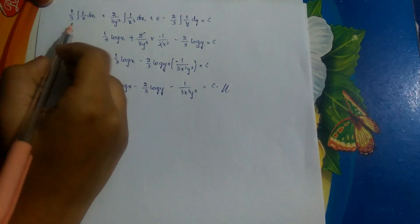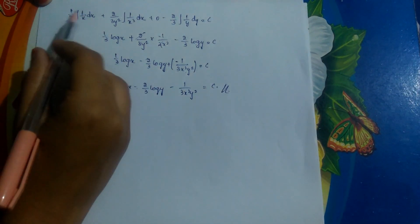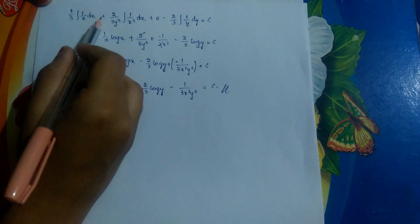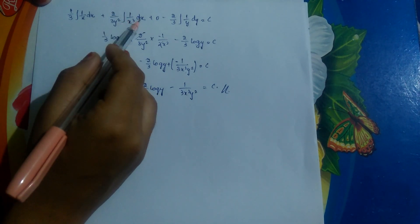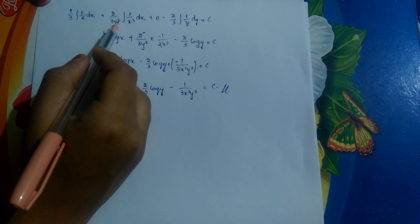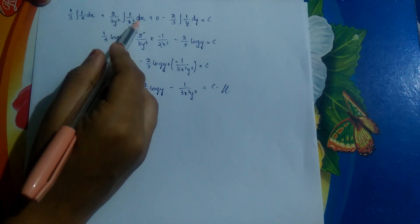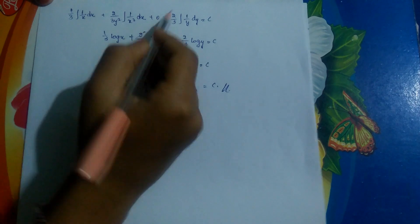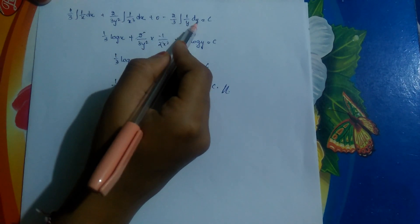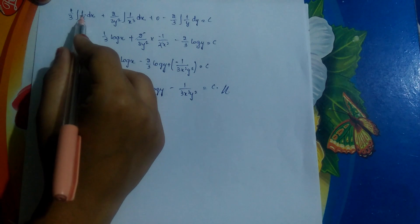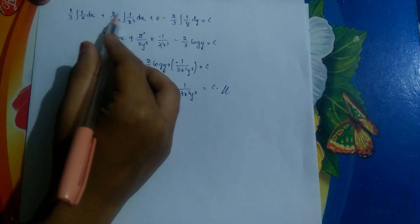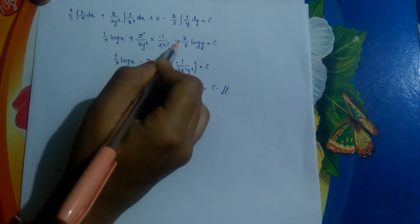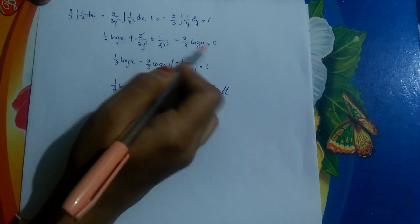Simplifying further: (1/3)∫(1/x) dx + (2/(3y²))∫(1/x³) dx + 0 - (2/3)∫(1/y) dy = c. The third integral is zero because it contains an x term. Evaluating: (1/3) log x + (2/(3y²))·(-1/(2x²)) - (2/3) log y = c, which simplifies to (1/3) log x - 1/(3x²y²) - (2/3) log y = c.